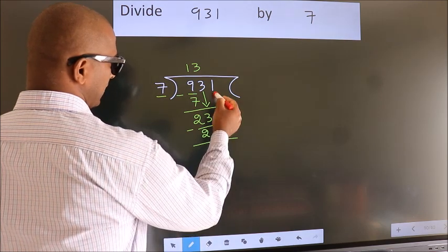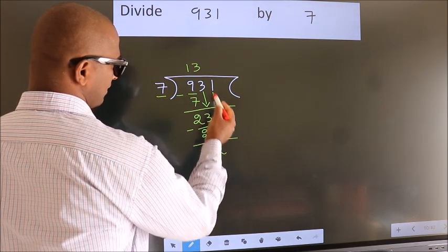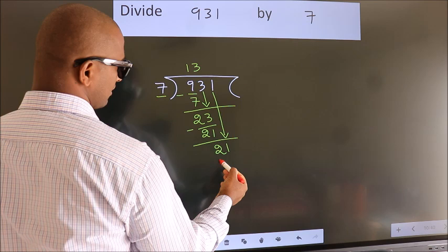After this, bring down the beside number. So, 1 down. So, 21.